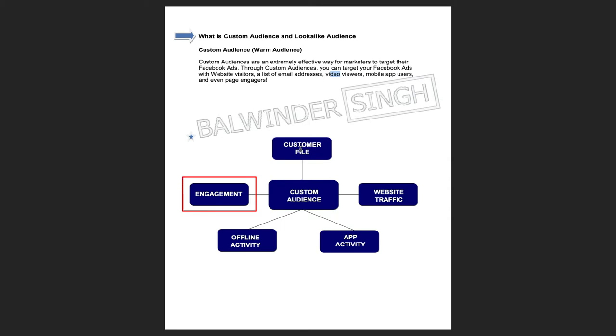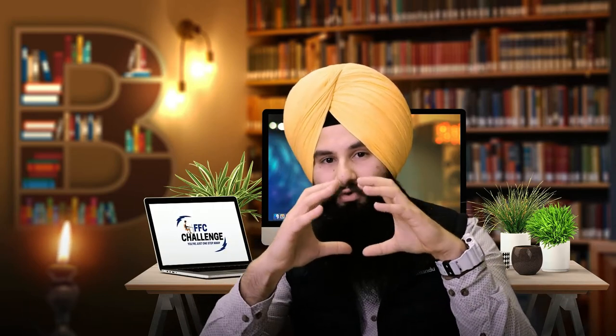You can target those customers again through custom audience options. How do you create a custom audience? First is the customer file — the emails you already have. You upload those email addresses to Facebook and Facebook will show those ads to your audience since they already know you. For engagement, when people like, share, or comment on your posts, Facebook has their data and you can fetch it to make a segment of those people and re-target them.